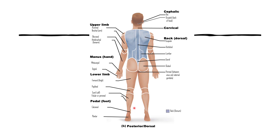The popliteal region refers to the back of the knee — do not confuse it with the patellar region, which is the front. On the foot, calcaneal refers to the heel — think of the Achilles tendon, also called the calcaneal tendon. The plantar refers to the sole of the foot, like when you're planting your foot down. That concludes our review of the anatomical terms of the human body.